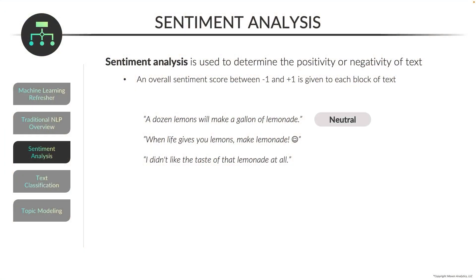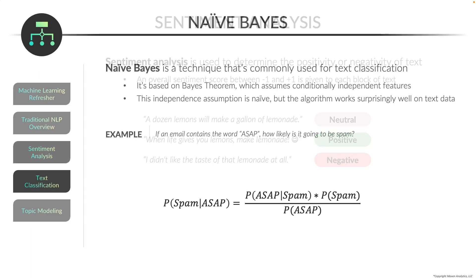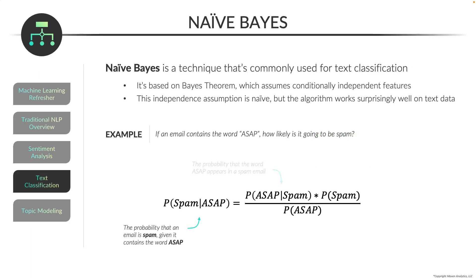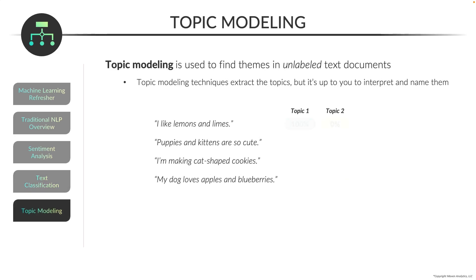Next, we'll dive into traditional NLP applications, starting with sentiment analysis to determine the positivity or negativity of text using the Vader library. Then we'll cover text classification on labeled data with naive Bayes, as well as topic modeling on unlabeled data using non-negative matrix factorization, all using the scikit-learn library.